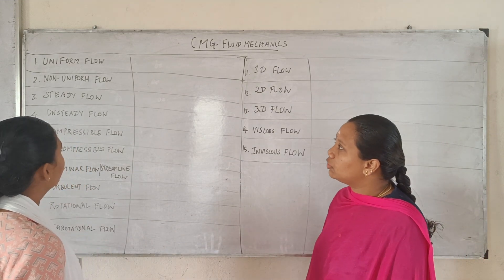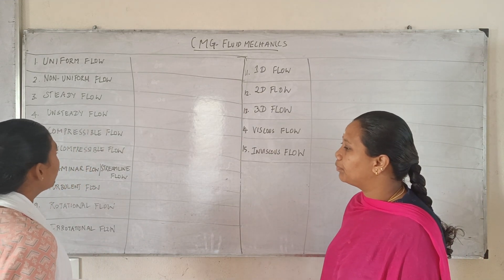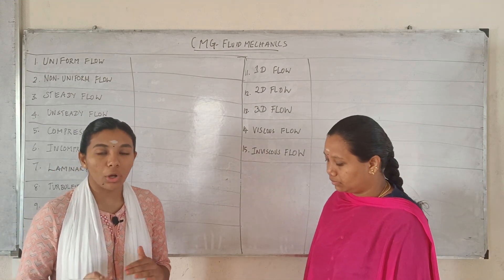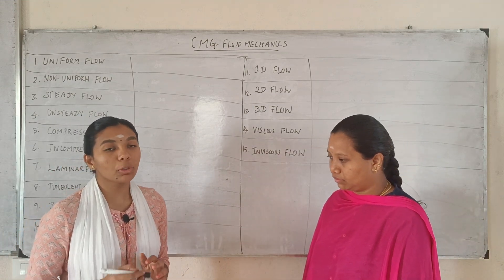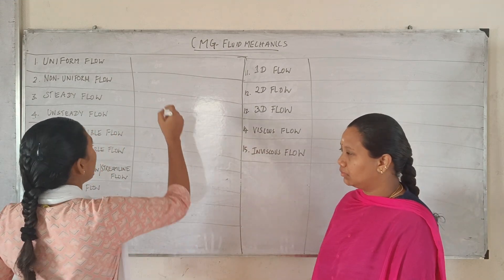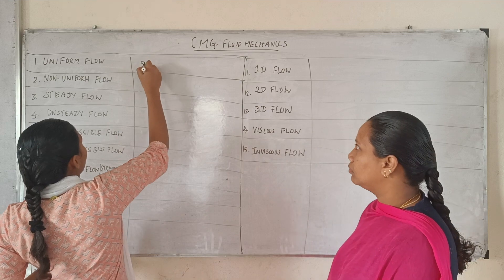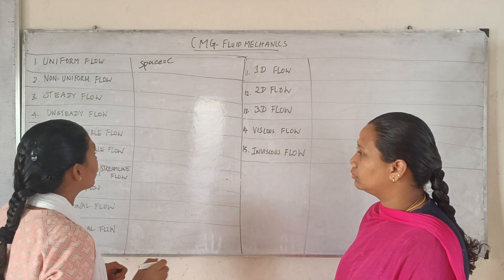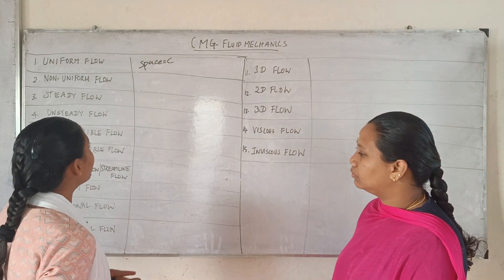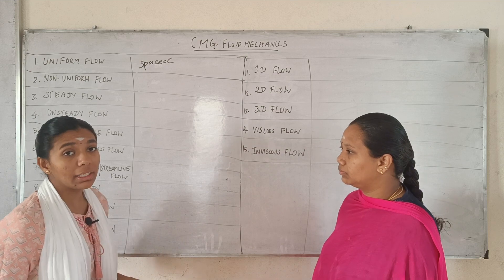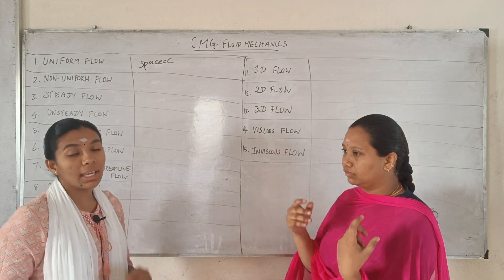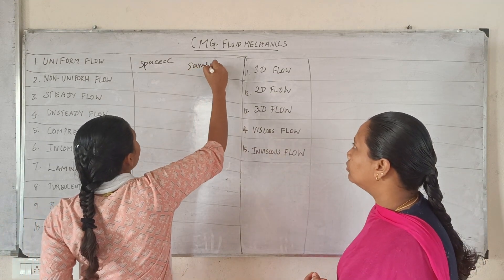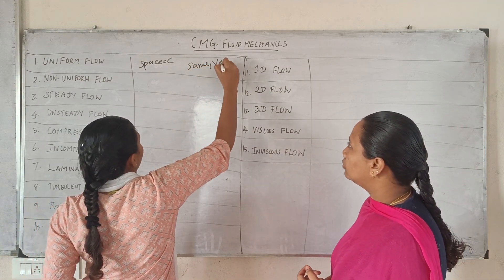First, uniform flow. The flow parameter remains constant with respect to space. Space is constant with uniform flow. The fluid particles have the same velocity.